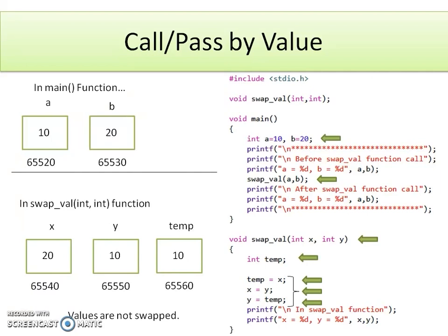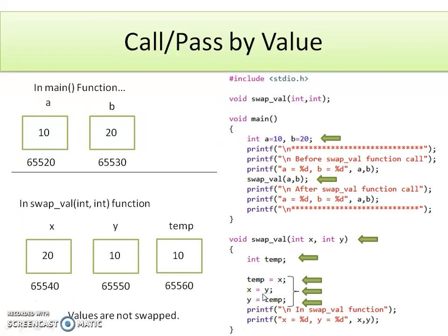That's why, by passing values to the function, there is no change in the calling function. Changes do not happen to the variables in the calling function. The actual arguments a and b remain as-is, and changes are done only to the formal arguments. It means that by calling a function by value, the changes are done within the called function only and are not reflected in the calling function. Try this program and check whether the values get changed in the calling function or not.